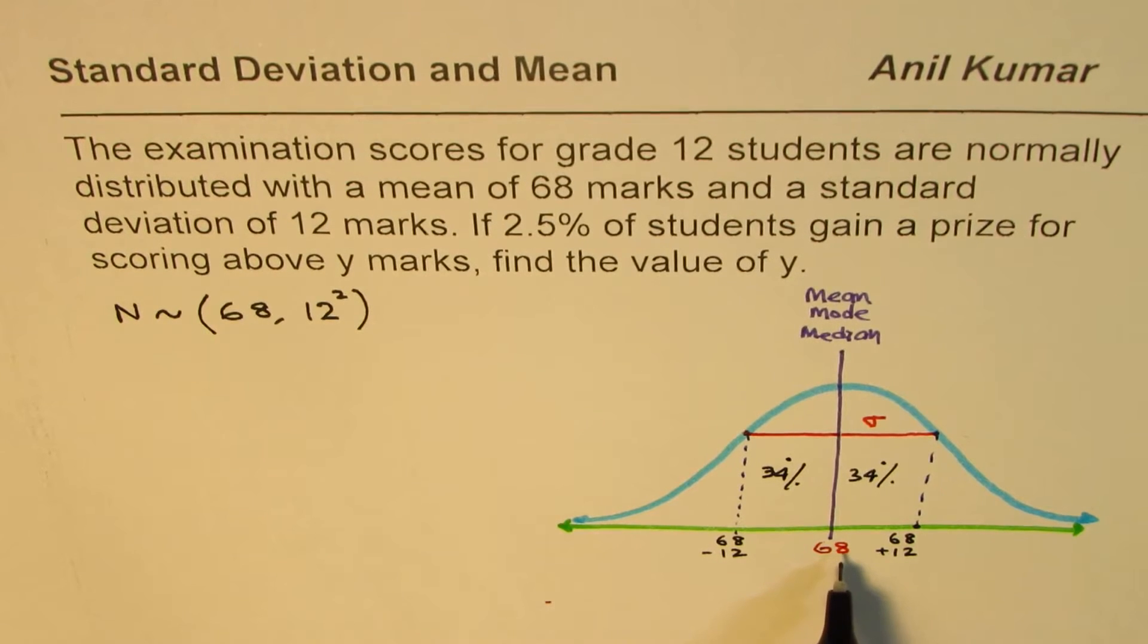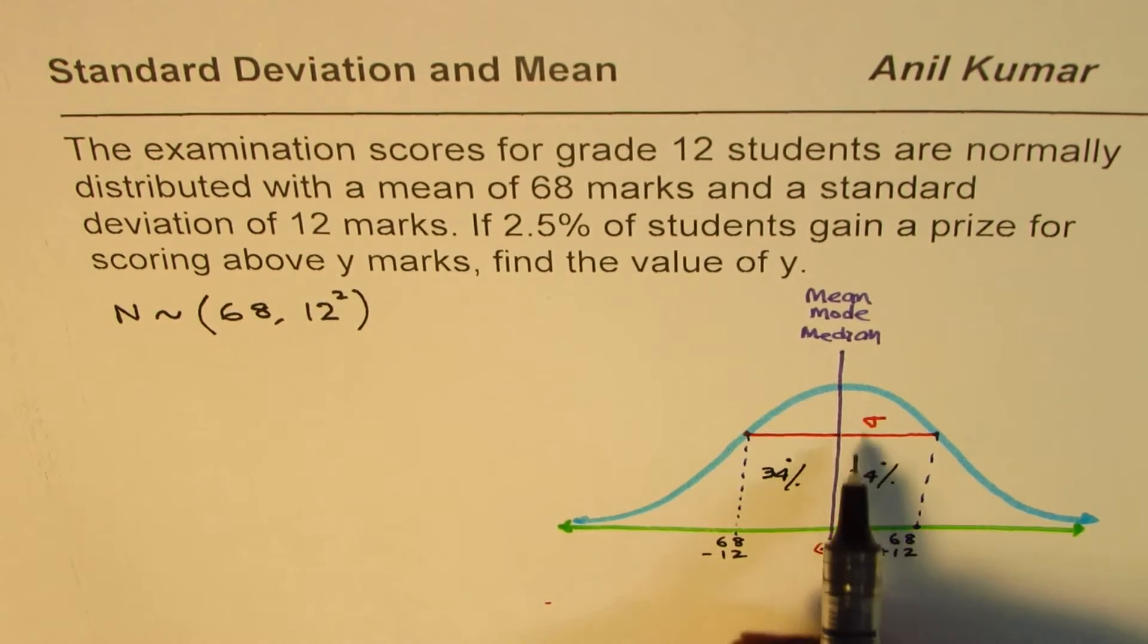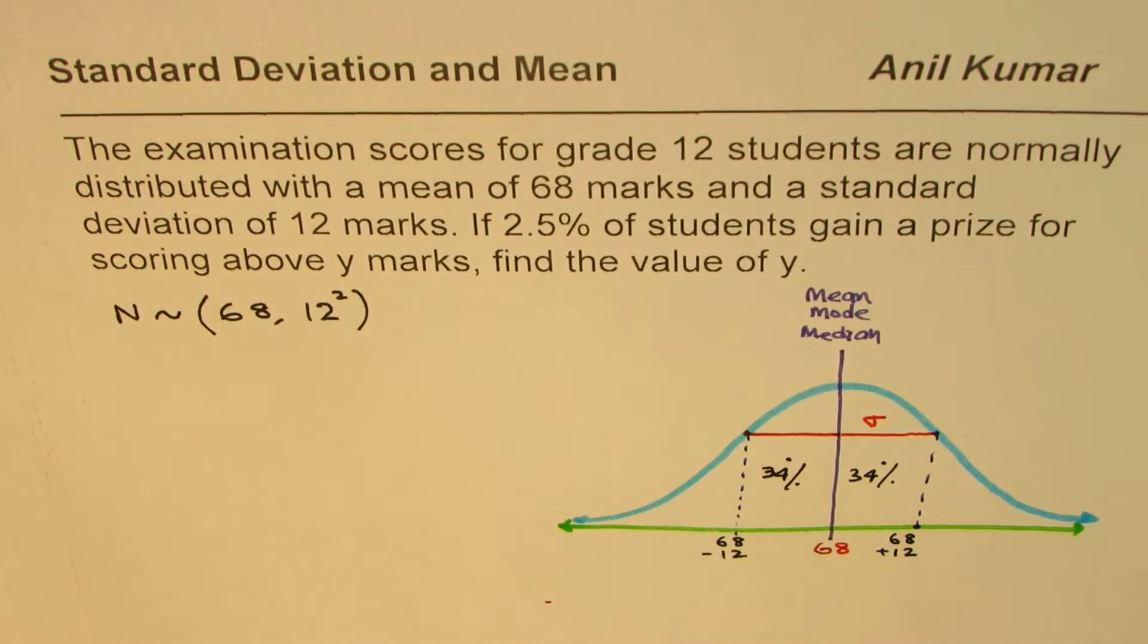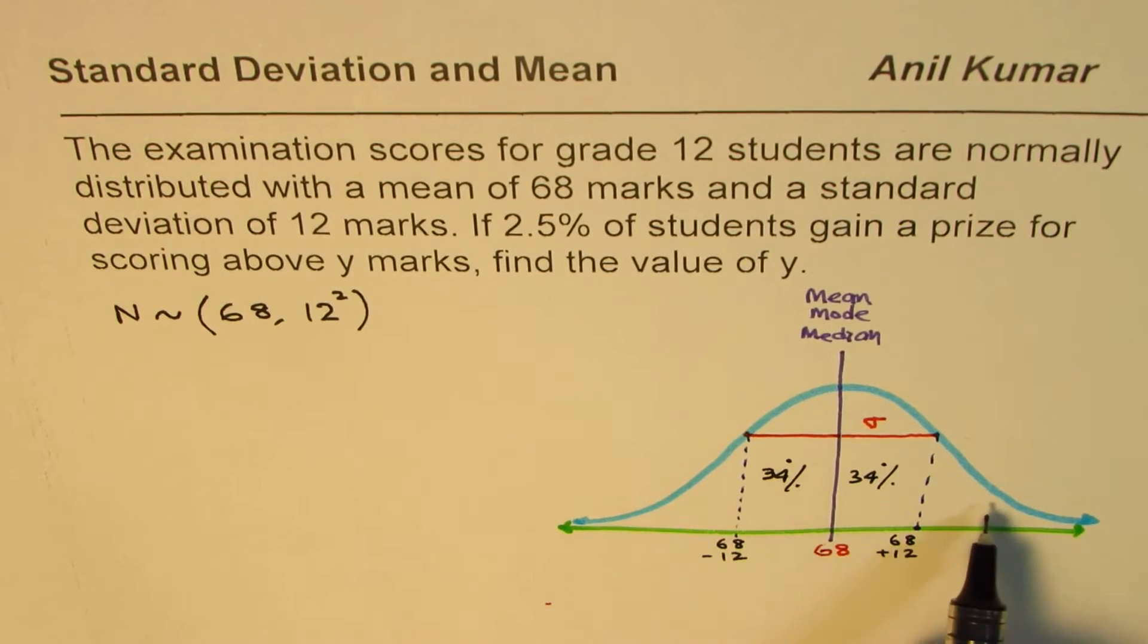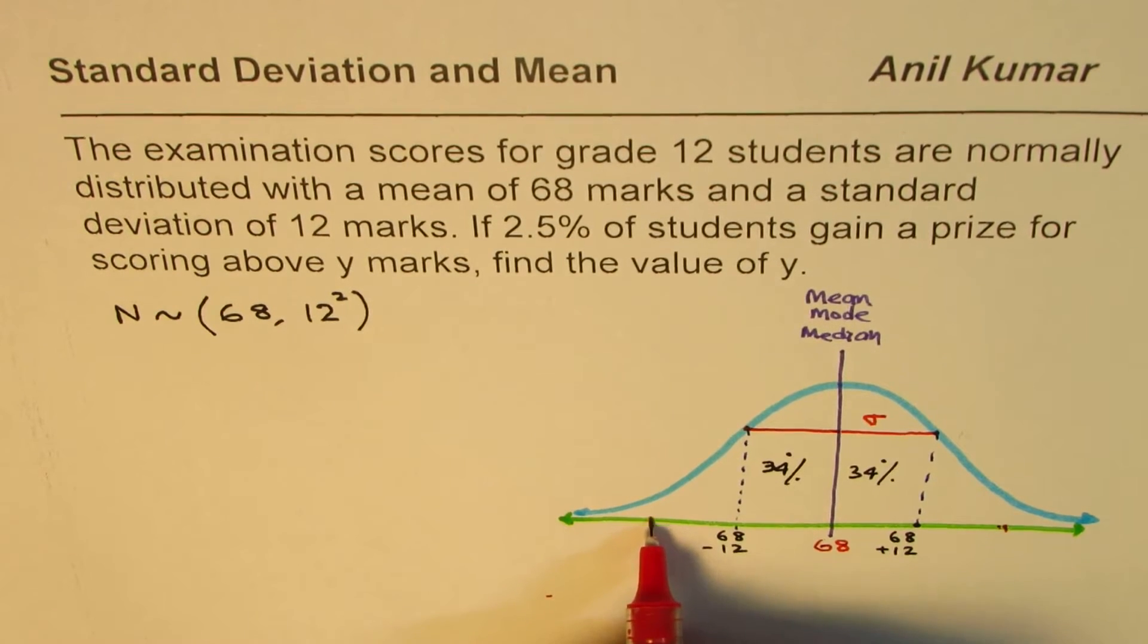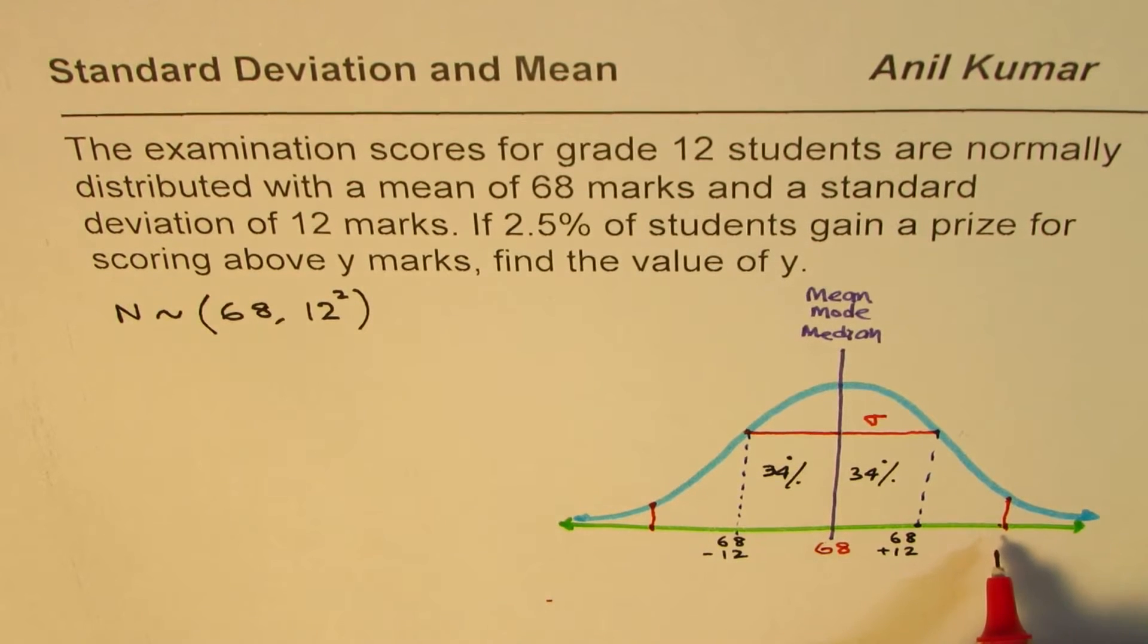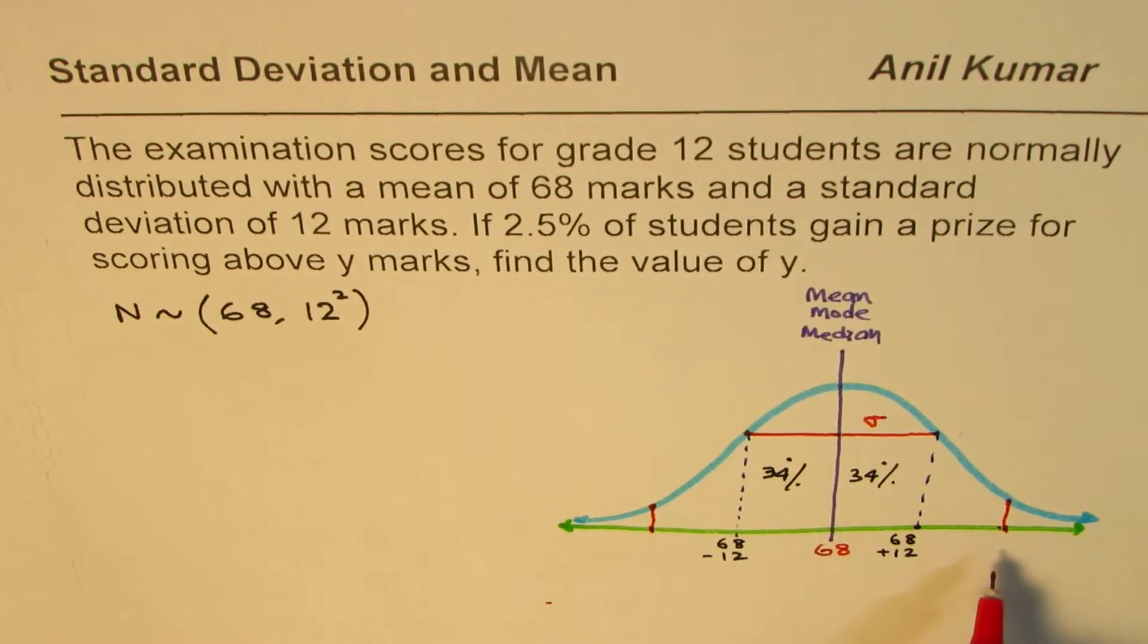Don't get confused with this mean 68 here. The second thing to know is that if we have two sigma away, then 95% of the data is within that range. So if we move 12 more units to the right and 12 more units to the left, this point represents 95% of the data.